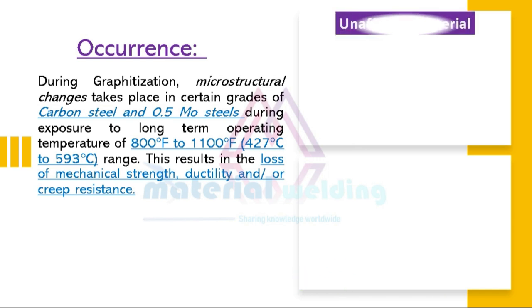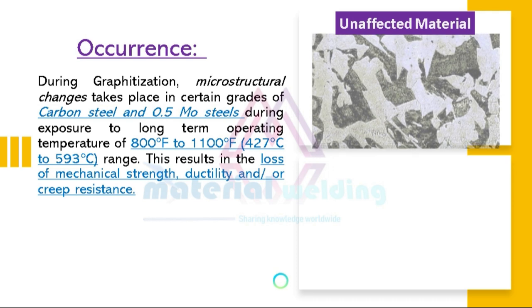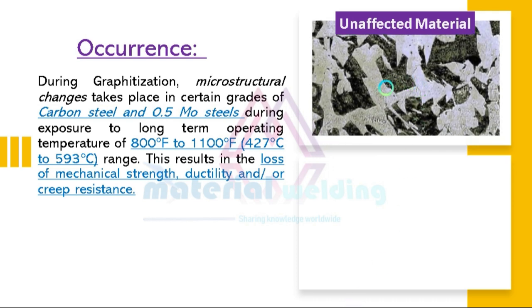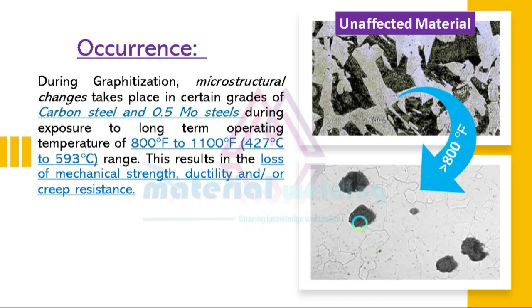The first picture shows the unaffected base metal of a carbon steel having pearlite and ferrite microstructure. When this material is exposed to 800 degrees Fahrenheit, graphitization takes place, as visible by the black areas in the second picture.